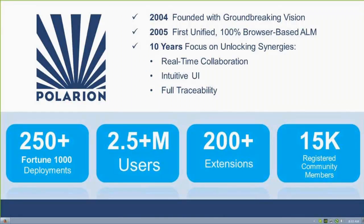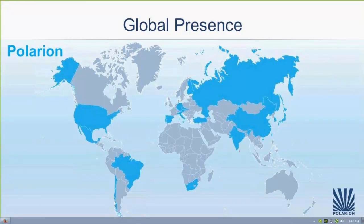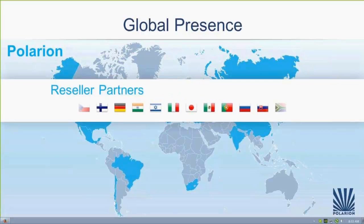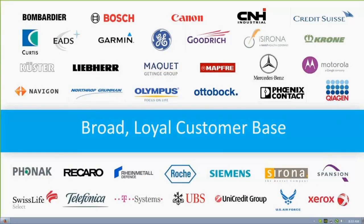This is one of the big ones. We have over 250 Fortune 1000 deployments, 2.5 million users around the world, over 200 extensions in our extensions portal, and over 15,000 registered community members on our forums. Polarian has a global presence through our reseller partners on all six continents. Our customer base is very broad, from aerospace to automotive to medical, and even pure software and service companies.